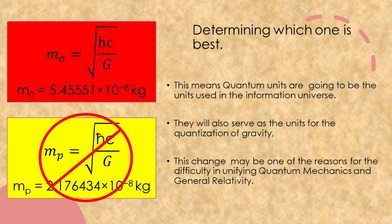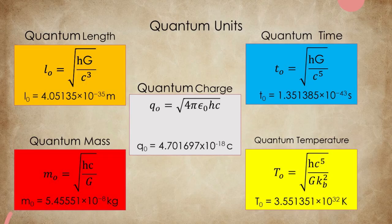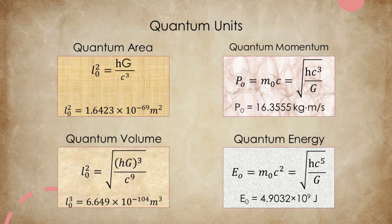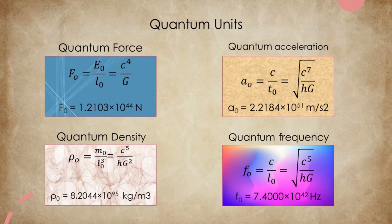This change may be one of the reasons for the difficulty in unifying quantum mechanics and general relativity. These quantum units are the natural units that form part of the basis of reality: quantum length, quantum time, quantum mass, quantum charge, and quantum temperature. They will form an important part of our unification of quantum mechanics and general relativity. We also have derived units: quantum area, quantum volume, quantum momentum, quantum energy, quantum force, quantum density, quantum acceleration, and quantum frequency.